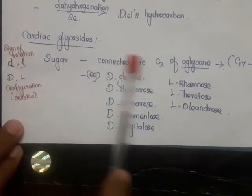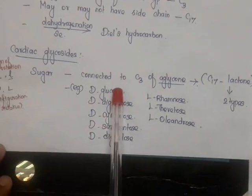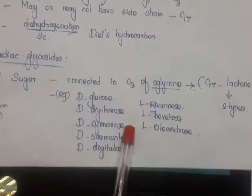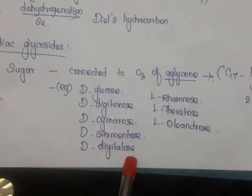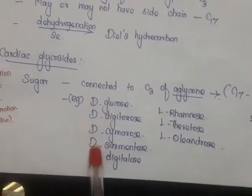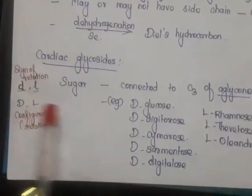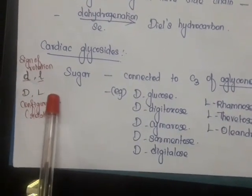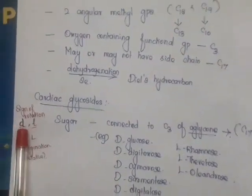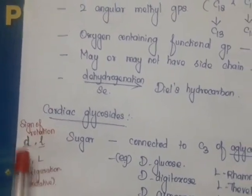The sugar is attached at the C3 position of the aglycone. Examples of sugars present in cardiac glycosides include D-glucose, D-digitoxose, D-cymarose, D-sarmentose, D-digitalose, L-rhamnose, L-thevetose, and L-oleandrose. Capital D and capital L represent relative configuration, which should not be confused with small d and small l, which indicate the sign of optical rotation — dextro or levo.